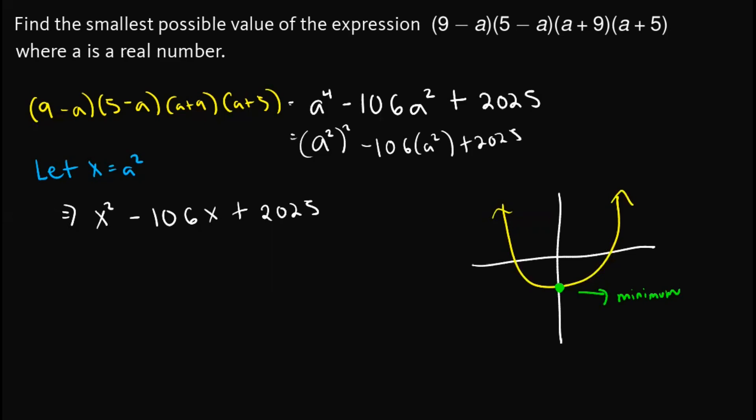we simply get the value of x equals negative b over 2a, where a is the coefficient of the x squared and b is the coefficient of the x term.